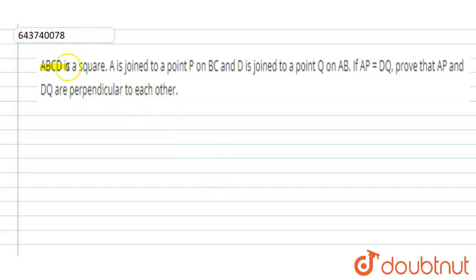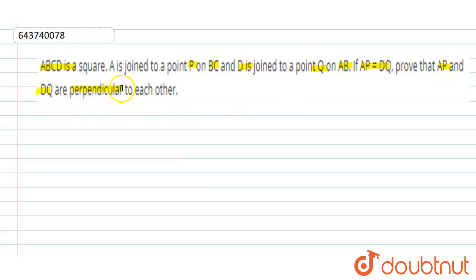ABCD is a square. A is joined to P on BC, and D is joined to Q on AB. If AP is equal to DQ, prove that AP and DQ are perpendicular to each other. We need to prove that AP and DQ are perpendicular to each other.